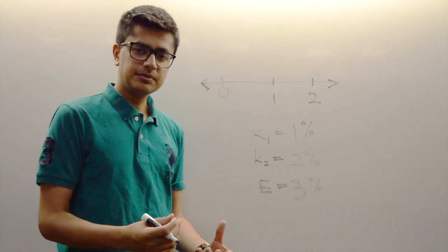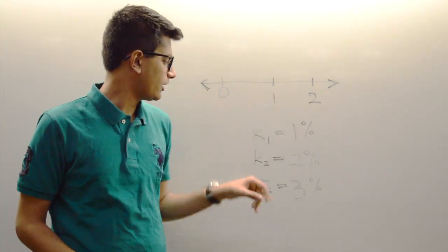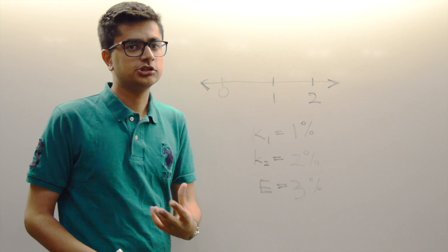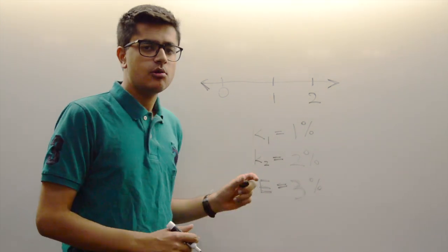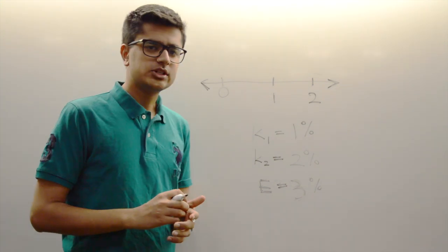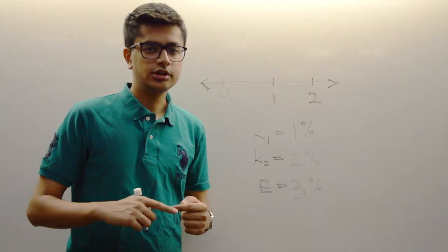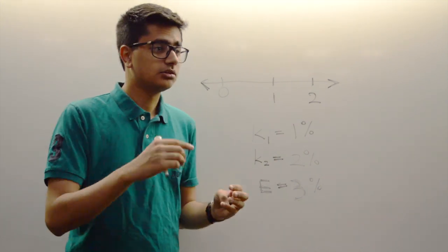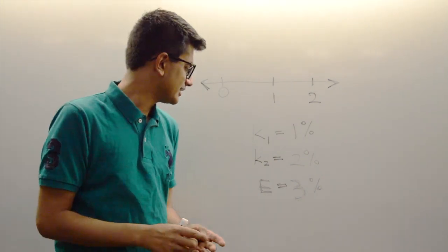I've set up an example here where we have a two-year timeline. I've written out three different interest rates. K1 represents the spot rate right now, the one-year spot rate, which basically means the interest rate you can earn for the current year. The one-year spot rate starting today.